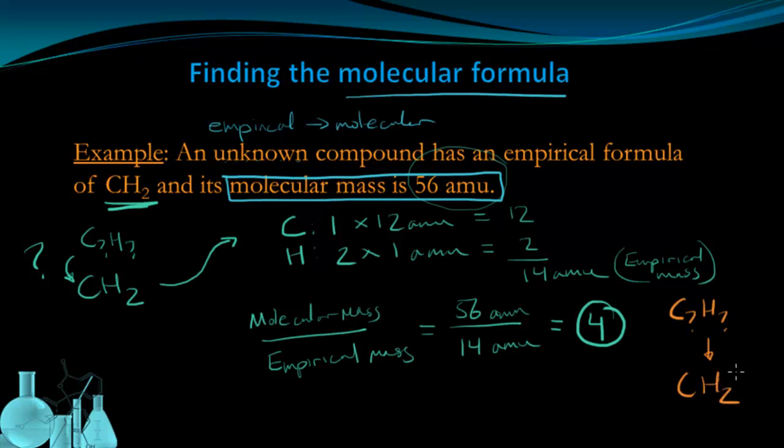4 tells me how much the original formula was reduced by to get to CH2. Now I just got to go the other direction and get back. I have one carbon in the empirical formula. I'm going to multiply that by 4. That's going to give me C4. I have two hydrogens in the empirical formula. I'm going to multiply that by 4. And that's going to give me 8 hydrogens.